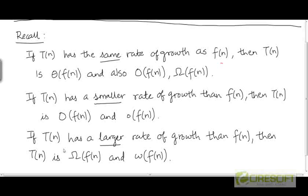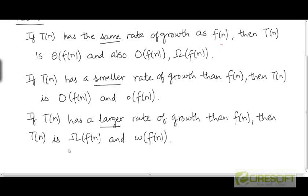The third possibility is that t has a larger rate of growth than f, in which case it is a member of Ω and little ω. Little ω is the set of functions that exclusively have a larger rate of growth than f. And big Ω is the set of functions that either have the same rate of growth as f or a larger rate of growth than f.